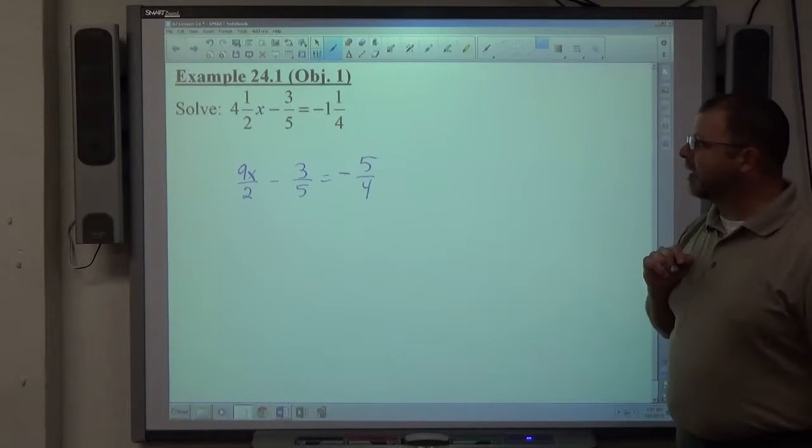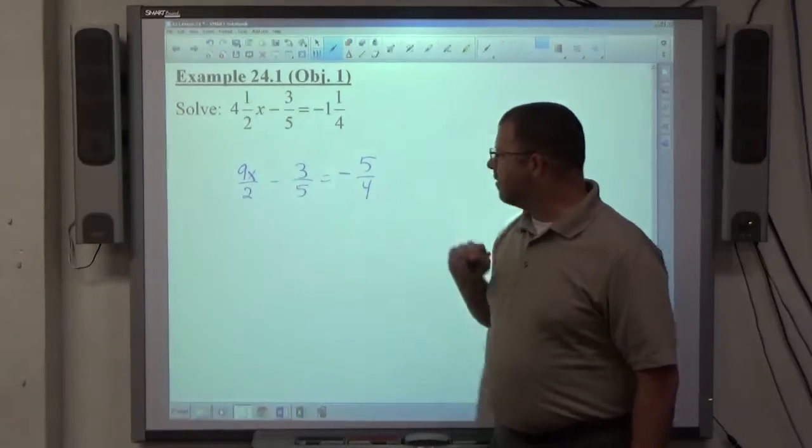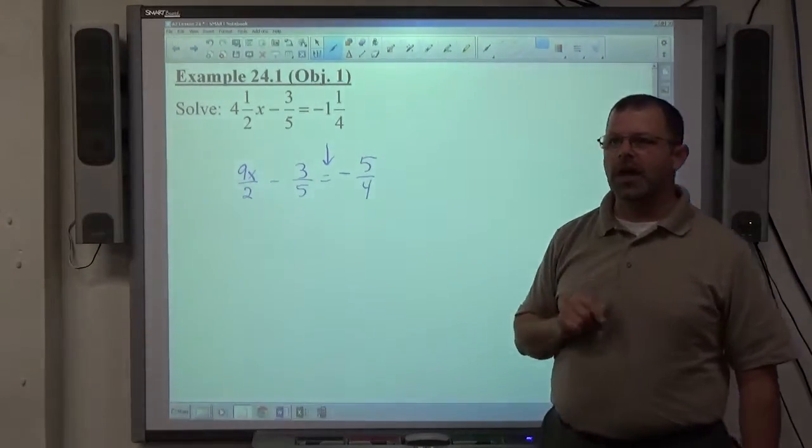So once we get a nice simple fraction problem, the common denominator of these fractions 2, 5, and 4 is 20. And since it's an equation, we're allowed to get rid of fractions.